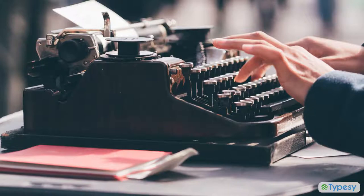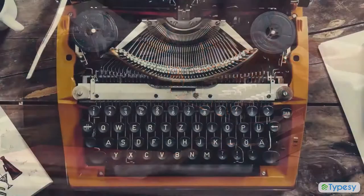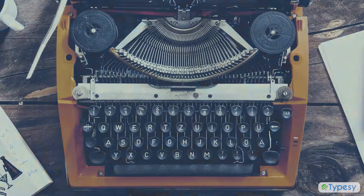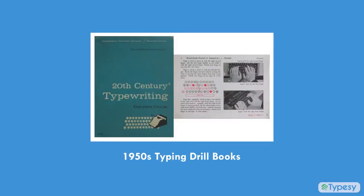But as typists got faster, the mechanical keys would jam up. To slow down the typist and avoid jams, many of the most popular letters in the English language were moved to the opposite sides of the keyboard.